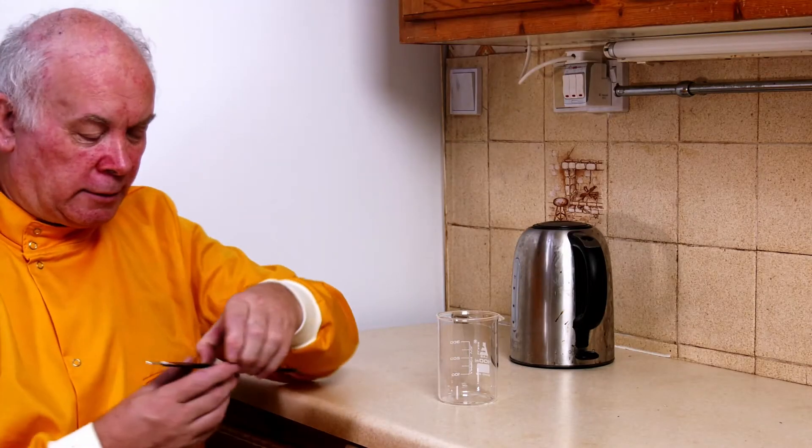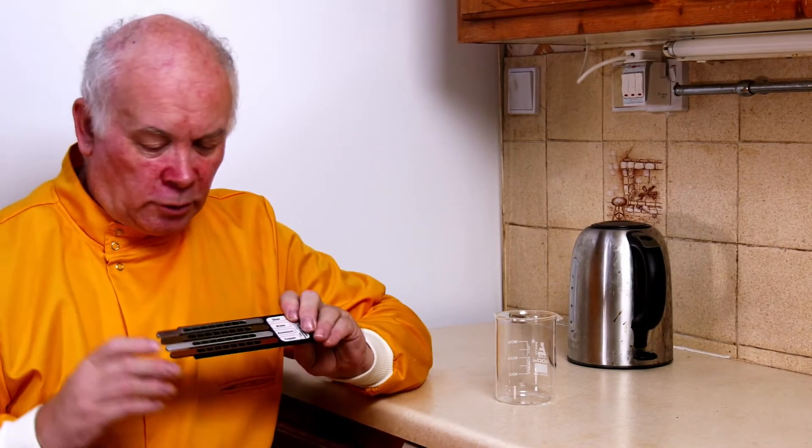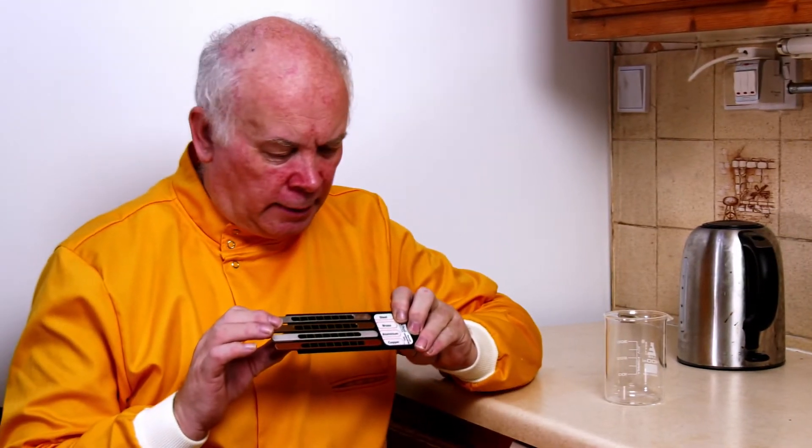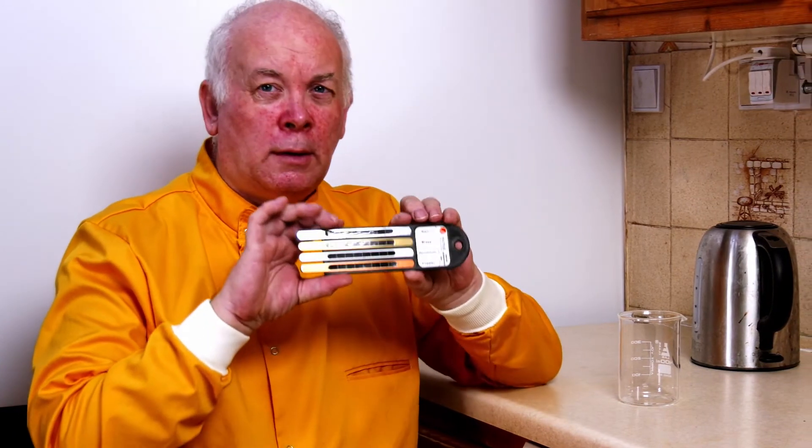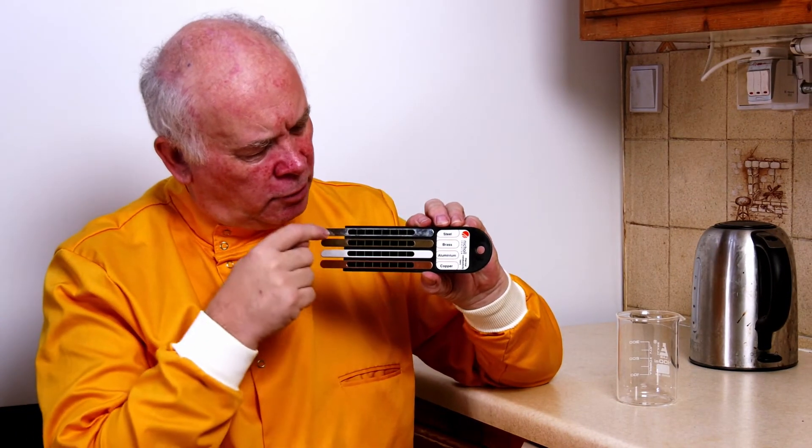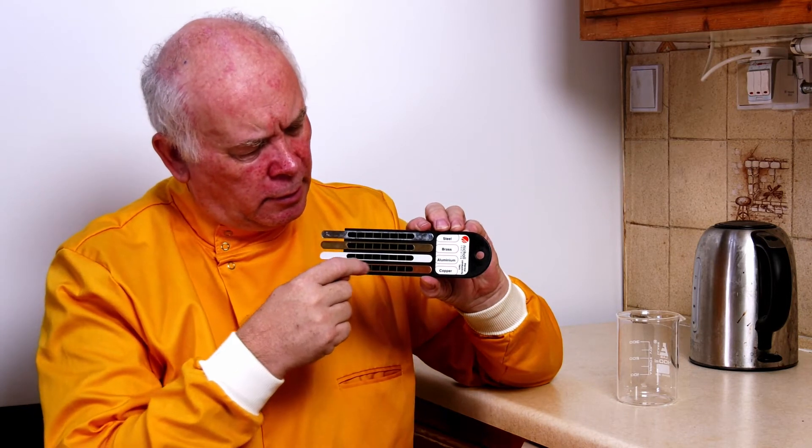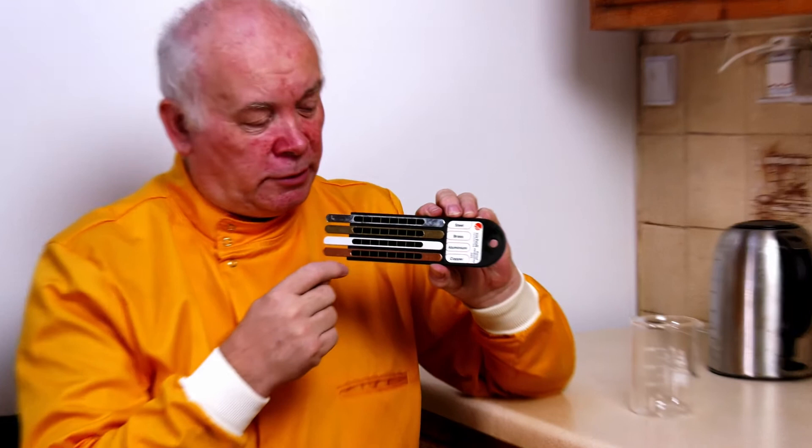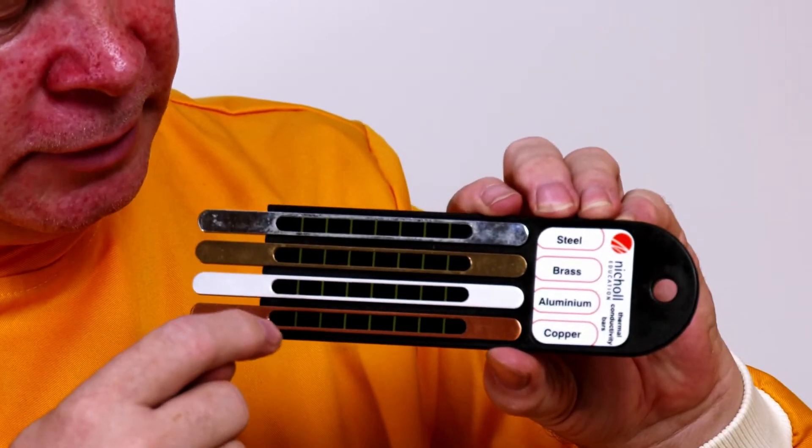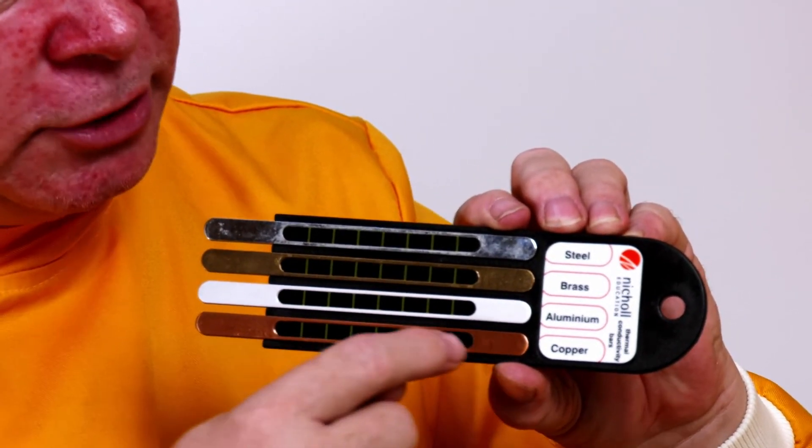In this experiment I've got four metal rods: copper, aluminium, brass, and steel. Each of these rods has got pinned to it one of these forward thermometers, and these change colour when the temperature changes. But unlike one that goes on your forehead which is all at different temperatures, these are all the same.